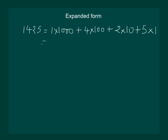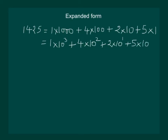Using exponents, the same thing can be written as 1 multiplied by 10 cube, plus 4 multiplied by 10 square, plus 2 multiplied by 10 power 1, plus 5 multiplied by 10 power 0. Hence, exponents have made it easier to write the expanded form of any number.